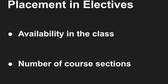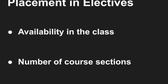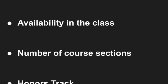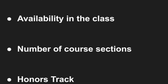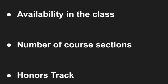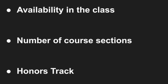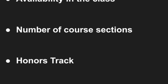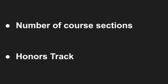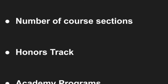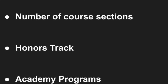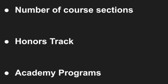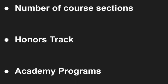It is important to note that we strive to give students their top elective choices, although we cannot always guarantee it. Several factors can impact how a student is placed in an elective class — for example, availability in the class, the number of course sections available, whether or not a student is on the honors track or in an Academy program, and of course, the design of our master schedule. We ask for your understanding in this process.